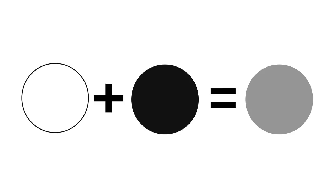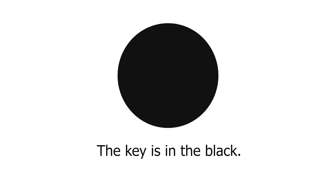Gray is mixed by combining white and black. White is not mixed — it's absolutely pure. But many blacks are mixed or can be mixed, and this is how we manipulate the gray that is produced. The key is in the black. Black is a strong color, and in fact it's so strong that many artists prefer to mix their own black. This gives us control over the color temperature as well as the intensity, and often leads to a more natural-looking black that doesn't overpower an image.